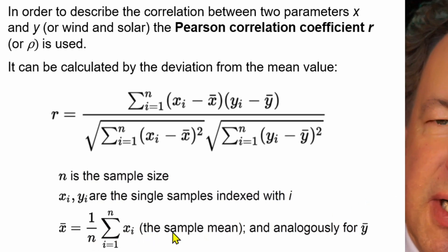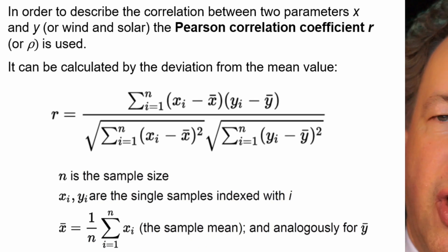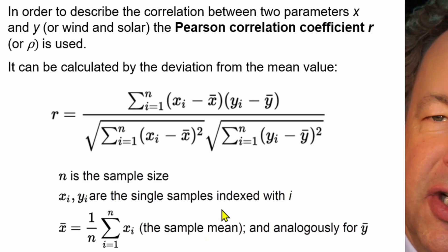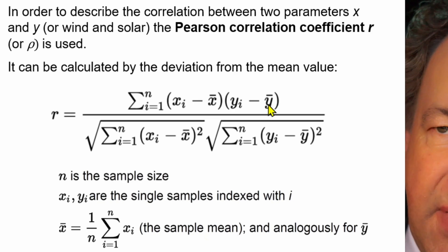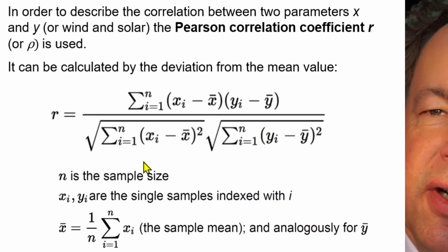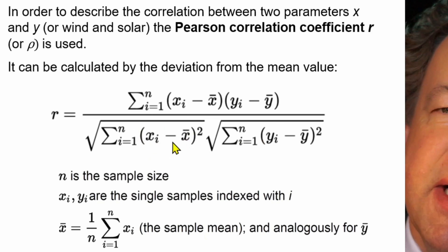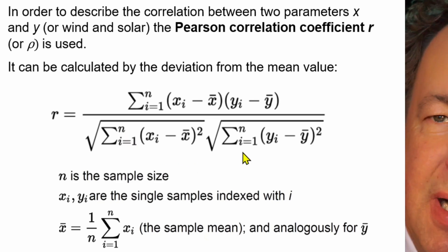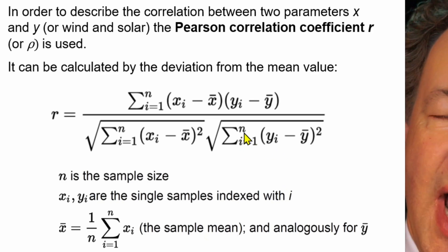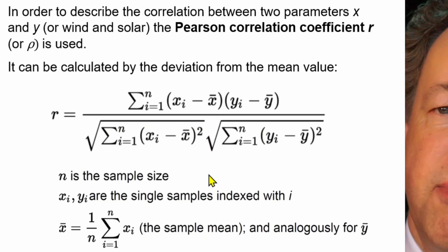The same applies for y-bar. So on the numerator we have the differences of the actual value to the mean value for x, multiplied by the actual value minus the mean value for y. Then on the lower part, we have the differences squared — the sum of squared differences for x from 1 to n, and also the same for y from 1 to n. We then build the square root of those sums and multiply them with each other.